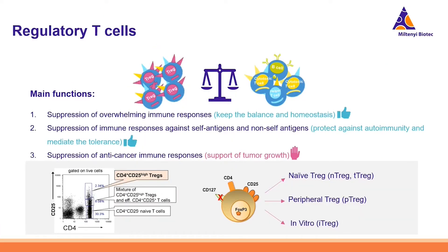Let's sum up what regulatory T-cells are actually doing. They have a really pivotal role in the immune system and three main functions. The first is to suppress overwhelming immune responses, and by this T-regs are keeping the balance and homeostasis in the body. The second function is to suppress immune responses against self-antigens, and by this T-regs protect against autoimmunity and mediate tolerance.